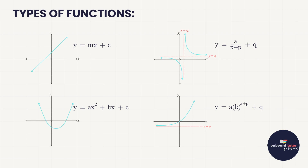In this video we will start a brand new section — the section of functions — and it's one of the biggest sections in our math syllabus. The first thing all students need is a good foundation in understanding the different types of functions. There are four main types that we look at in Grade 11, starting with the first one: the straight line graph, which we were introduced to in Grade 9. Then we have the parabola.